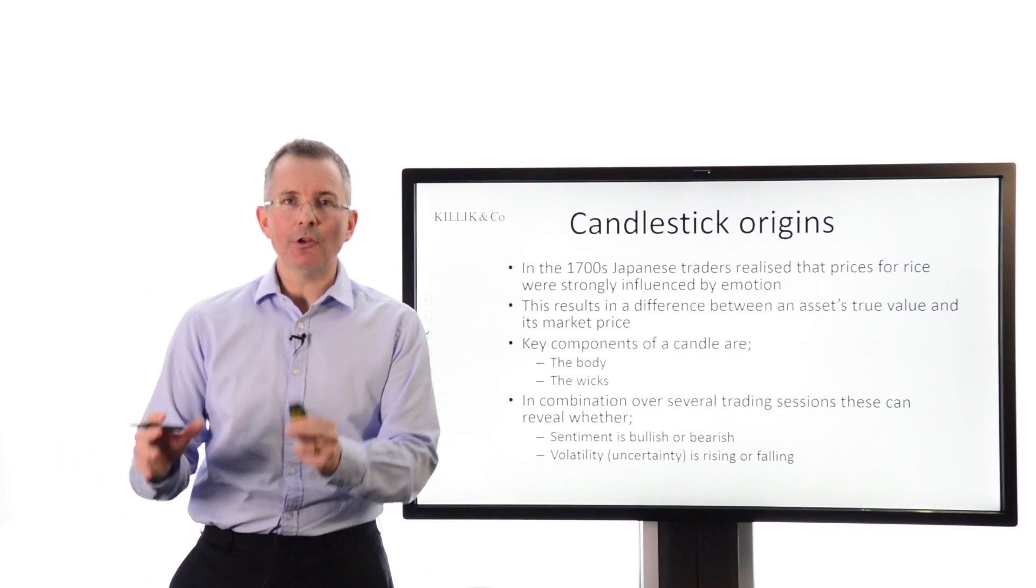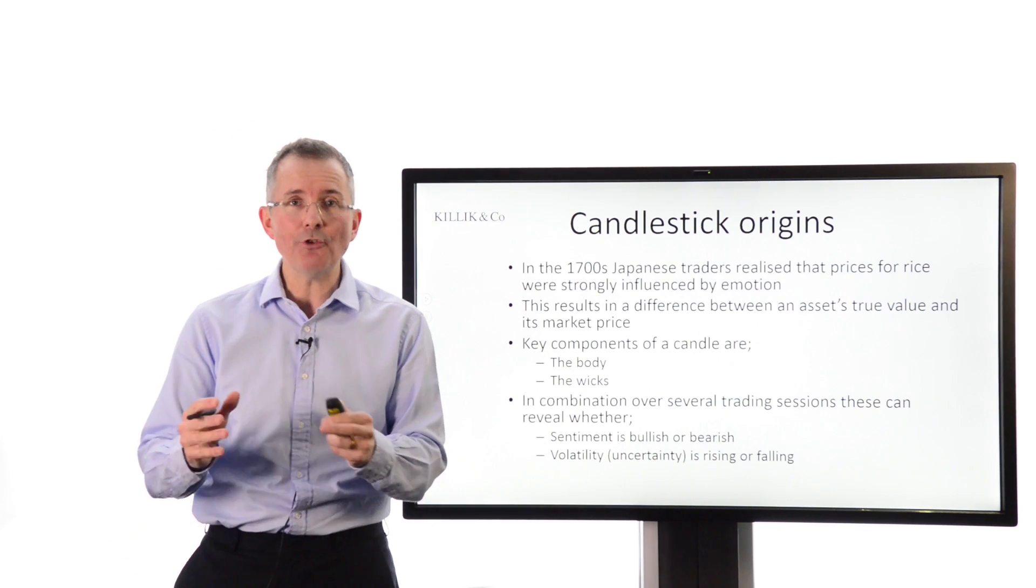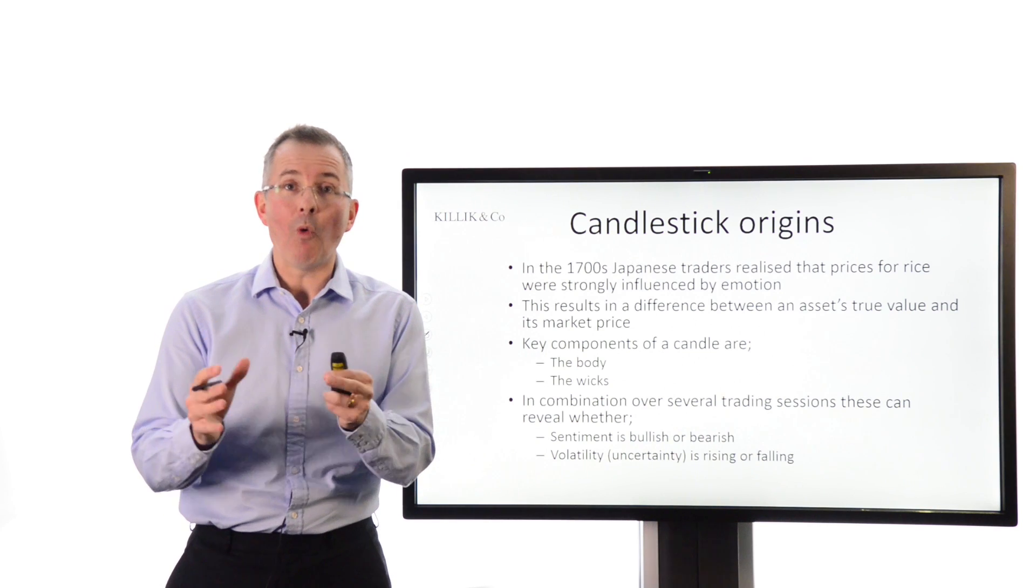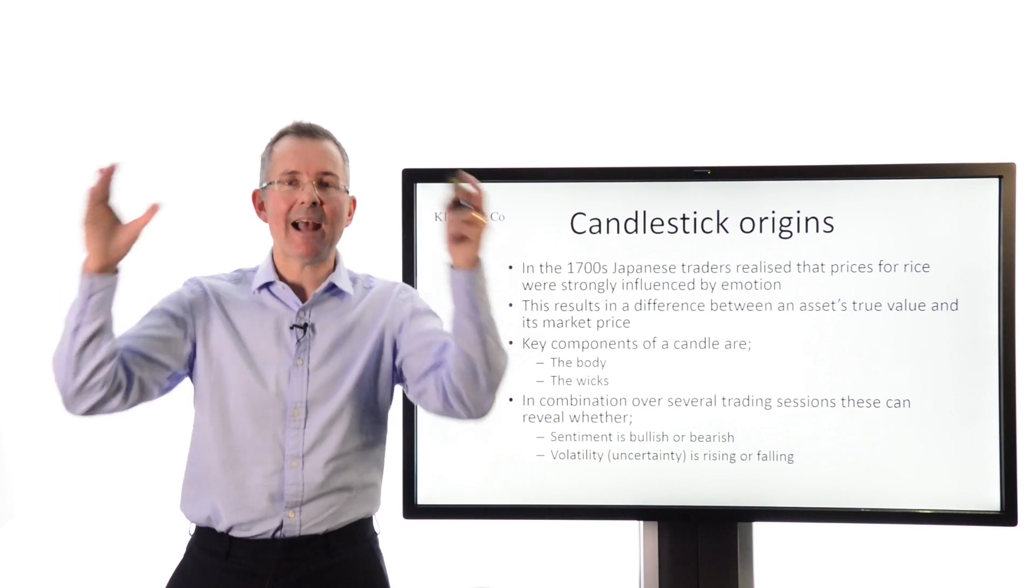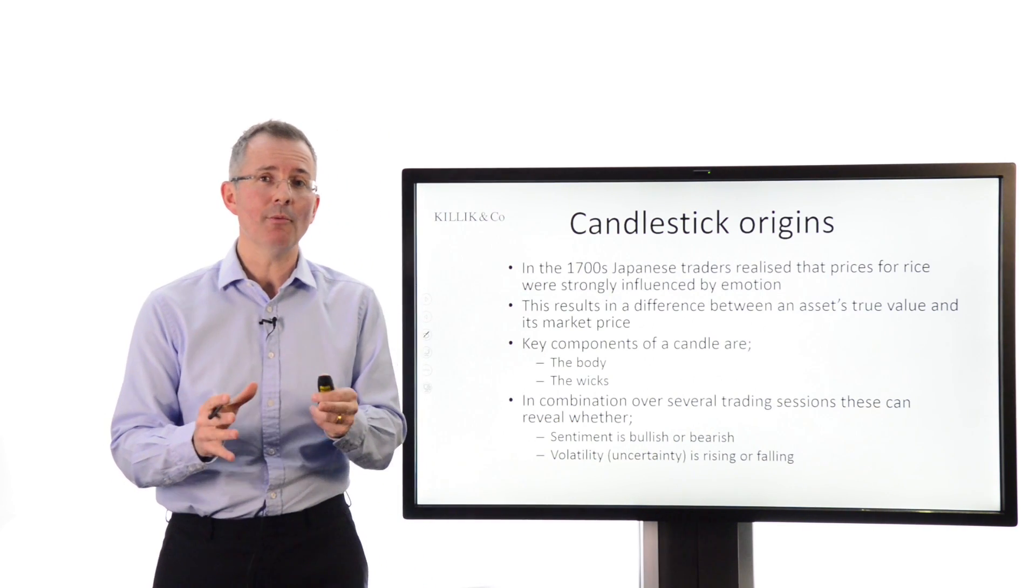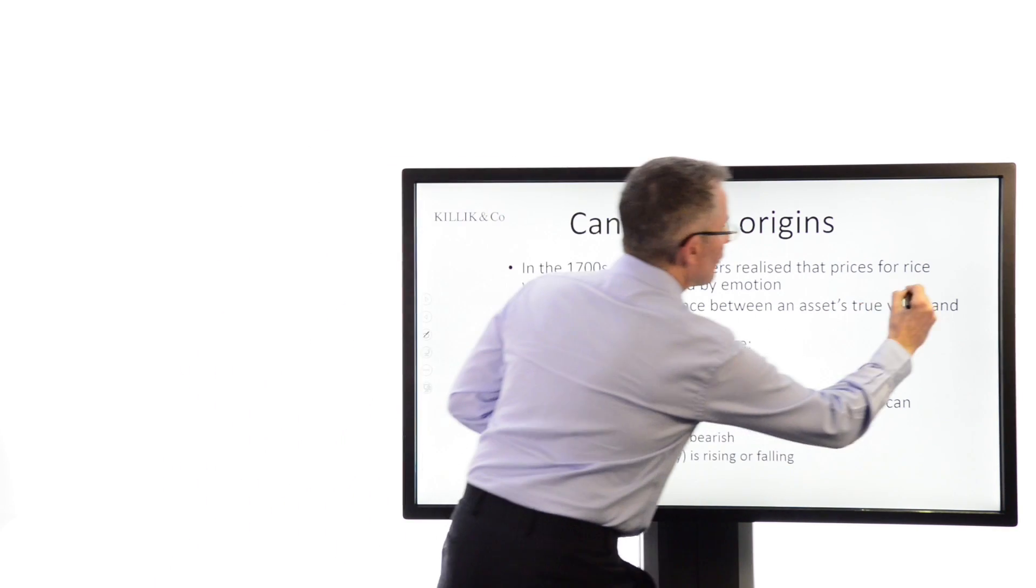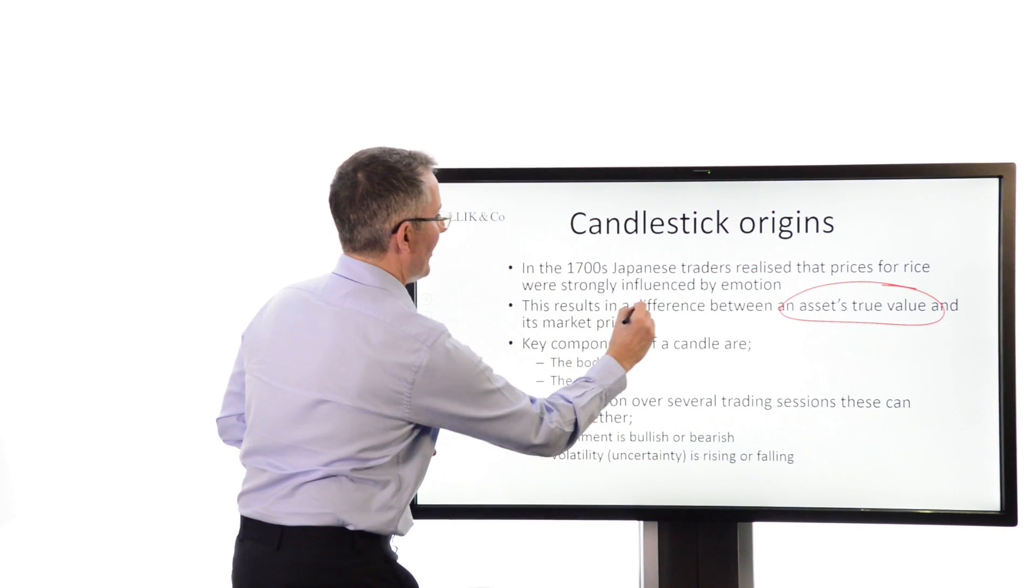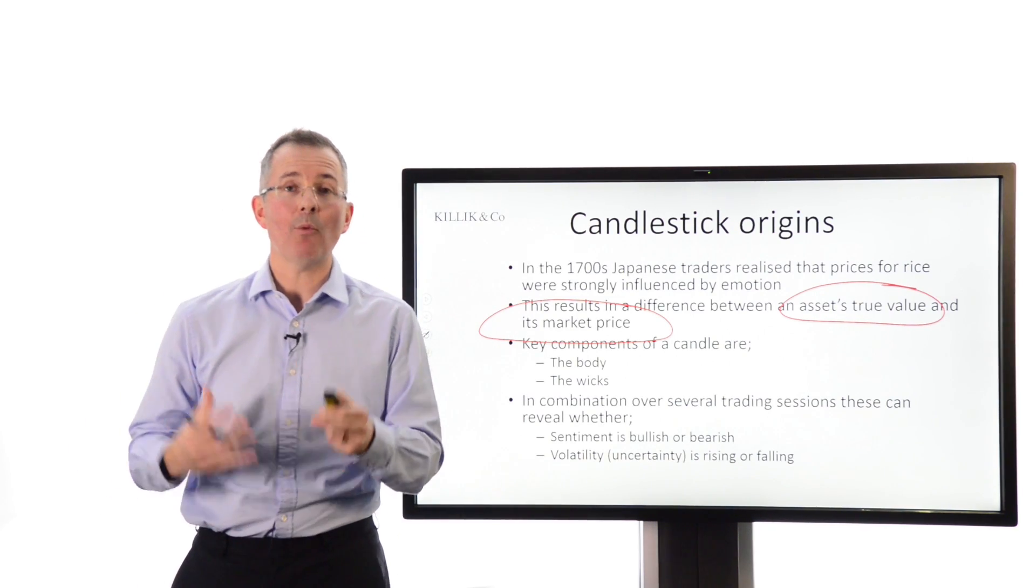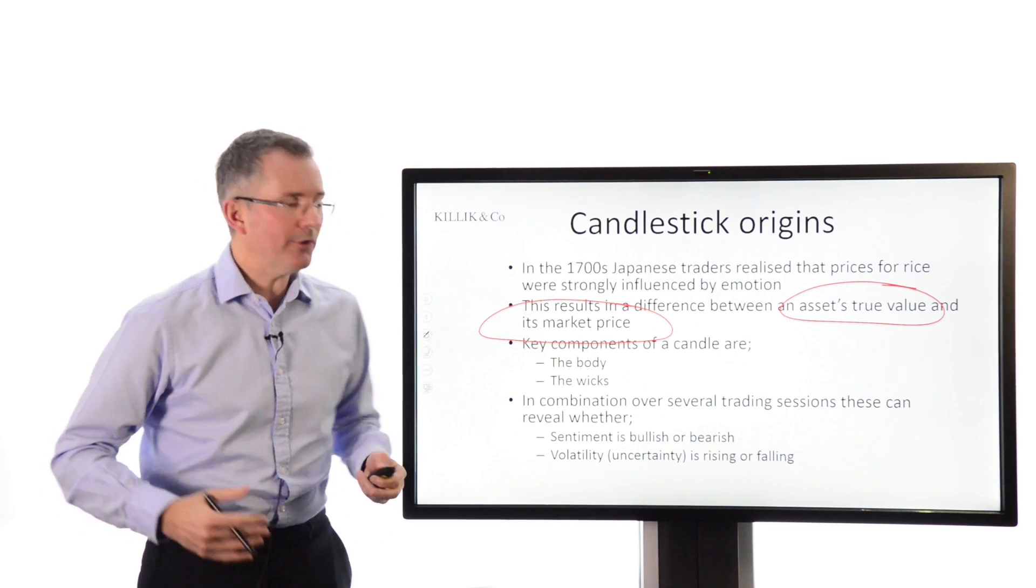Now, bar charts are quite useful, but candlesticks are even more useful. Candlestick charts, a few key facts here, they're centuries old. Japanese traders twigged quite early on that prices for things, and especially securities that trade in a massive liquid market, are driven as much by emotion as by rationality. After all, human beings are quite emotional at the end of the day. In other words, an asset's true value and its actual price can vary, because the price is driven as much about what people feel as what they kind of think, if that makes sense.